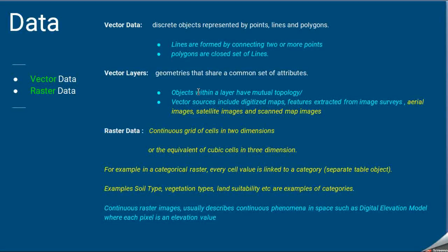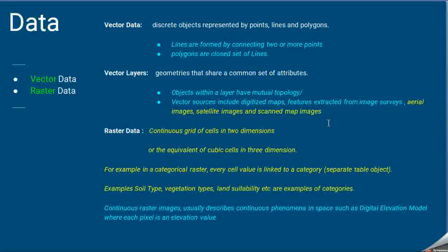Vector layers refer to digitized maps or features extracted from images — for example, aerial images, satellite images, and scanned map images. When we talk about such layers, they are called vector layers.